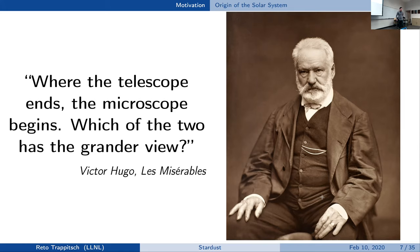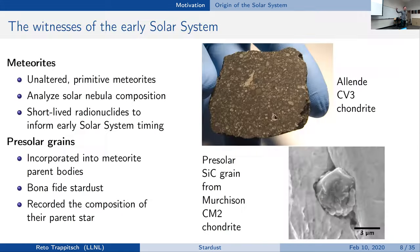Let's look at the samples we have in the solar system. On one hand we have meteorites — also called the poor man's space probe — because they fall on earth for free and we just have to find them and pick them up. For example, the Allende CV3 chondrite — rocks fall from space, we look at them, see what they are made of, and classify them. For this talk, we are mostly looking at what we call primitive meteorites.